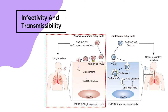Left image: The SARS-CoV-2 wild-type, or previous variants, mainly infect lung epithelial cells, which are TMPRSS2 high-expressed cells, and they enter the host cells utilizing the plasma membrane route. In the plasma membrane entry route, the virus first binds to ACE2, then binds to TMPRSS2, and is cleaved at the S-proteins. Subsequently, the S-protein anchors to the cell membrane and mediates the fusion of the viral membrane with the cell membrane. Finally, a pore is formed in the membrane and the viral genome is released into the cell.